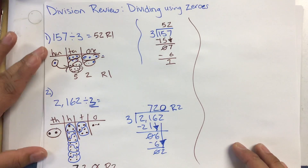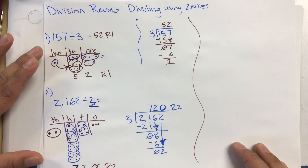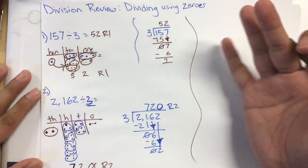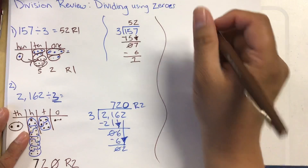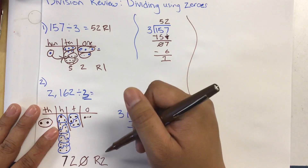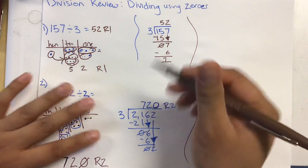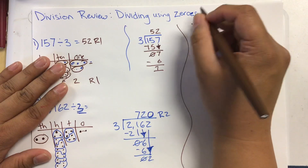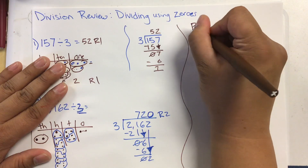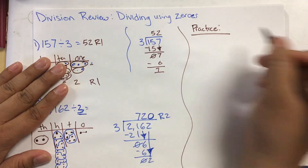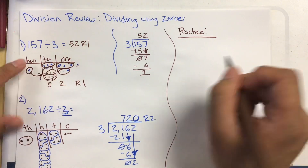That would be a good time for you to rewind and repeat this video to remember what to do when you encounter a zero. You can practice with some of these problems — remember when you have more numbers you're just repeating the same process until you have no more numbers to bring down.